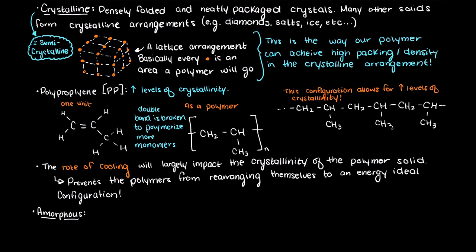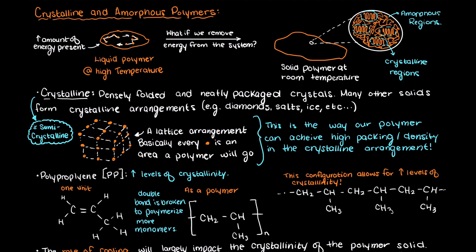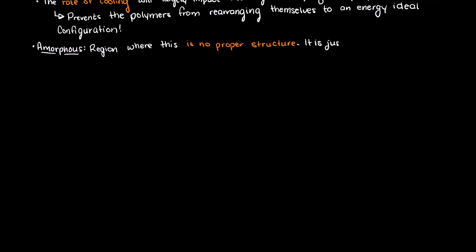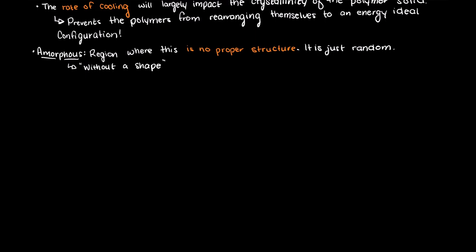Well, if a crystalline region is an area in a polymer where the polymers are neatly folded, an amorphous polymer must be an area where this isn't the case. An amorphous polymer is just a region in the polymer where there is no structured layout to the polymers, they are just random. Amorphous means without a shape, which is fitting and an easy way to remember what it is.